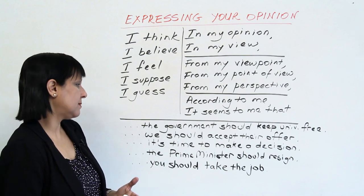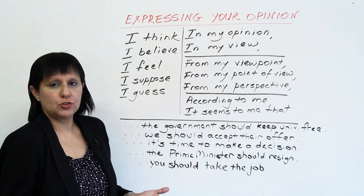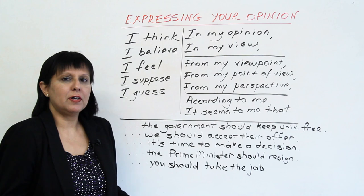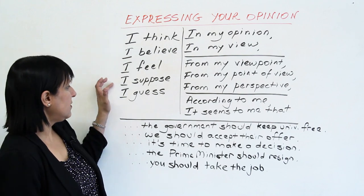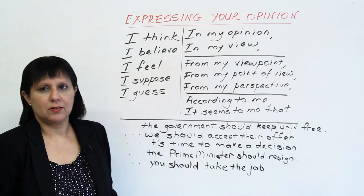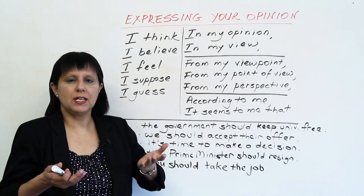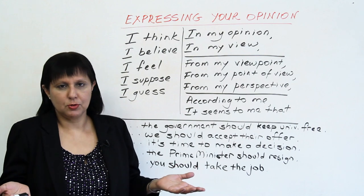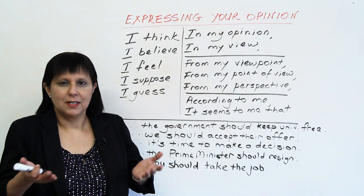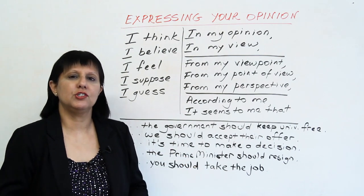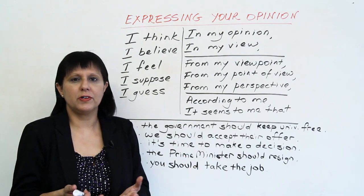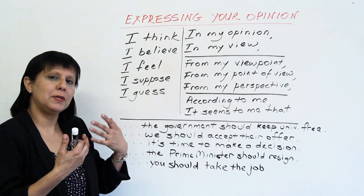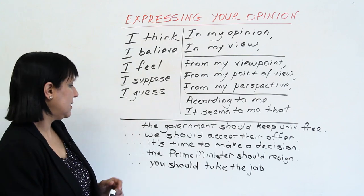Or, 'I suppose the government should keep university free.' Now, you see with my body language, here it's a little bit weaker. So you say, 'I suppose the government should keep university free.' But this kind of body language kind of suggests that you're not very sure, but you think so.